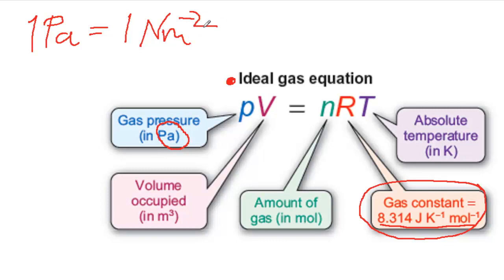Your volume will be in meters cubed. And remember that 1 meter cubed is equal to 1,000 decimeters cubed. So if you've got decimeters cubed, you'll have to convert. Your amount of gas will be in moles, and that's very straightforward.